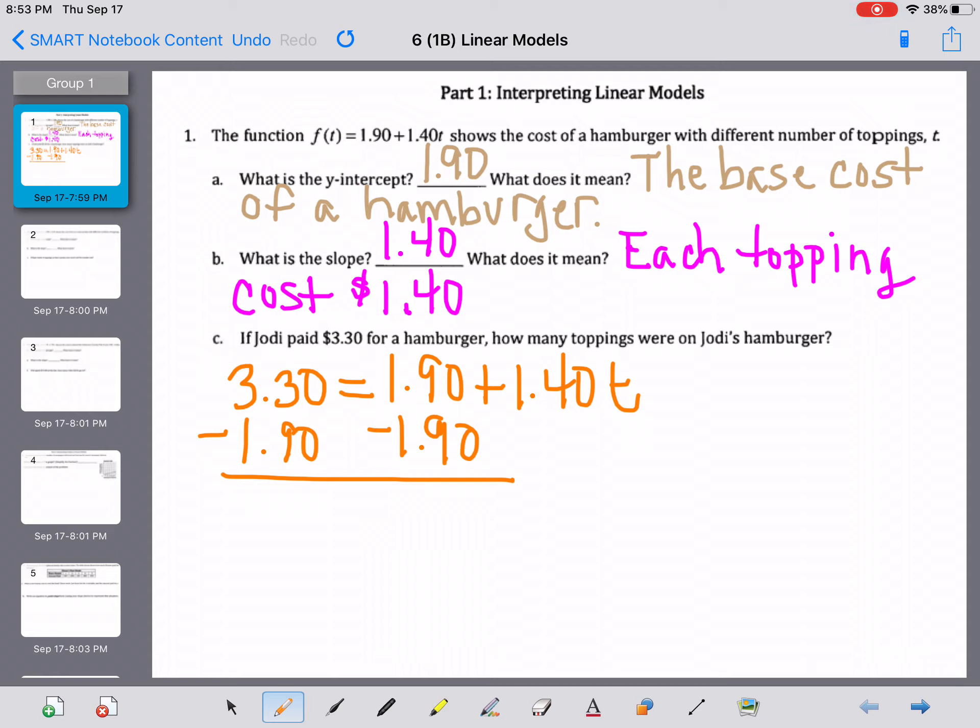And when we do, we get $1.40. We get 1.40, and over here we've got 1.40t, and we want to solve for t. So we need to undo. This is 1.40 times t, or multiplied by t. So we need to undo the multiplication by dividing by 1.40. So how many toppings did we have? We have one topping.